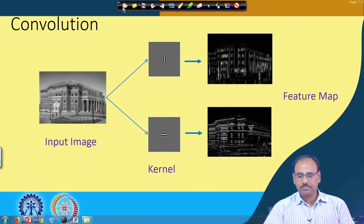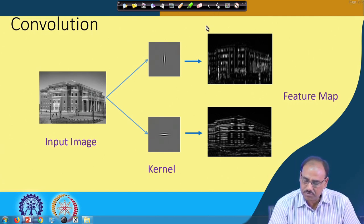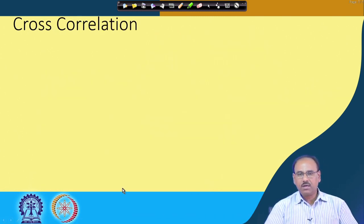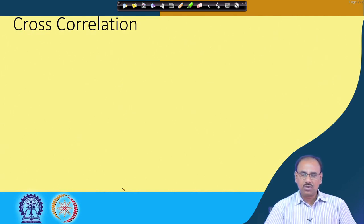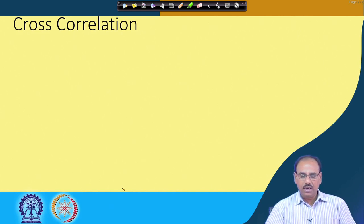Given this impulse response, for any input signal — whether a time domain or 1D signal or a 2D image — the output is the convolution of the signal with the convolution kernel, which is the response of the system to the given input. Now, a very closely related operation is known as correlation. When you find the correlation between two different signals, this is known as cross-correlation.